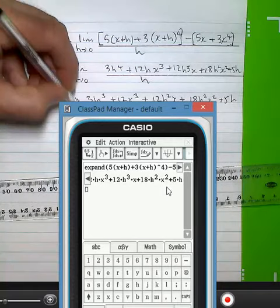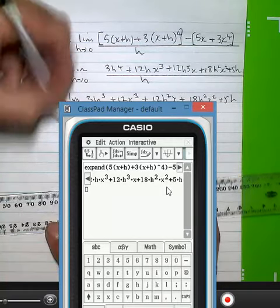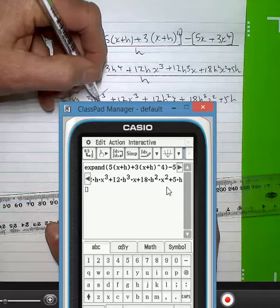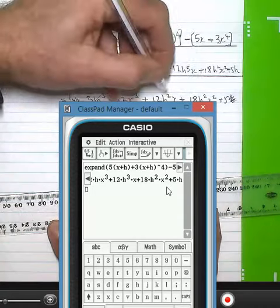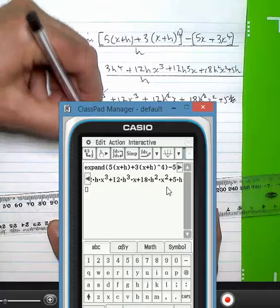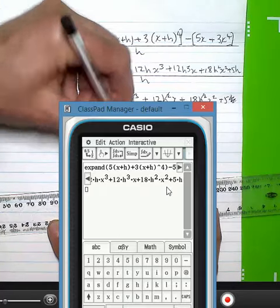Now, as h approaches zero, I lose everything that still has an h in it. So 12x cubed plus 5 will be the order of the day.